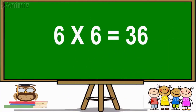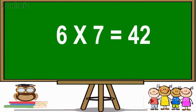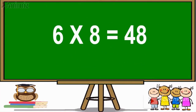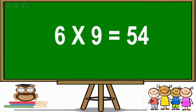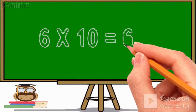6 sixes are 36. 6 sevens are 42. 6 eights are 48. 6 nines are 54. 6 tens are 60.